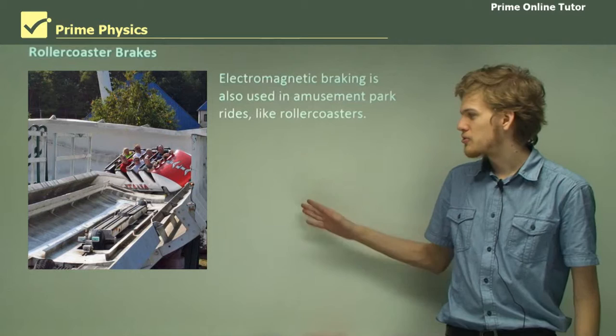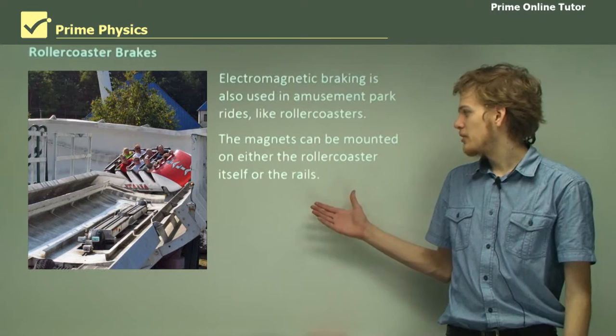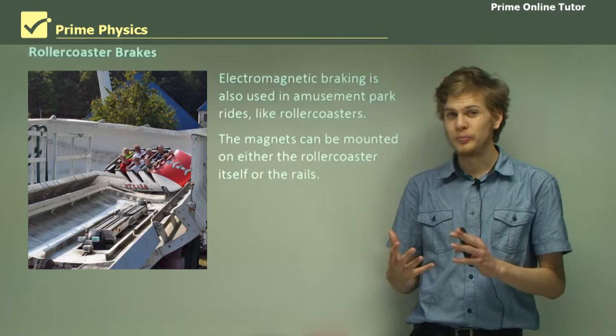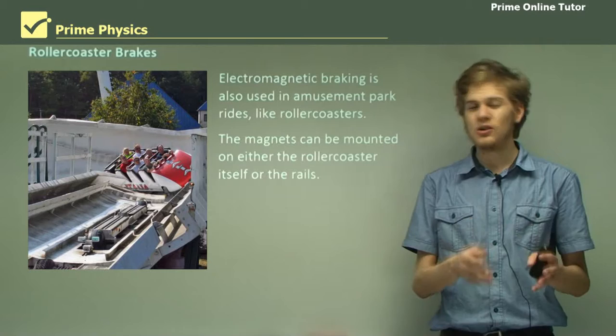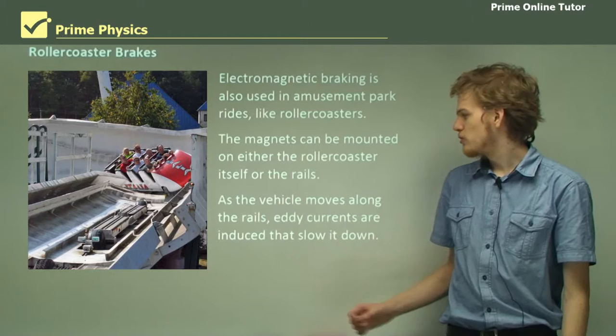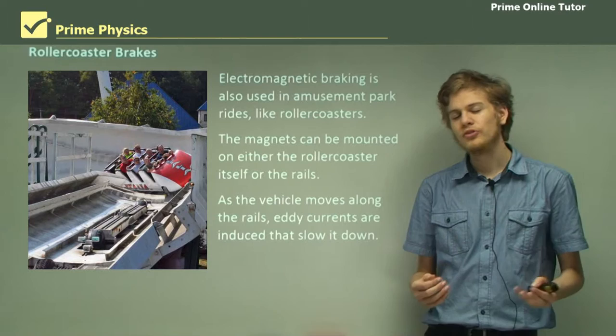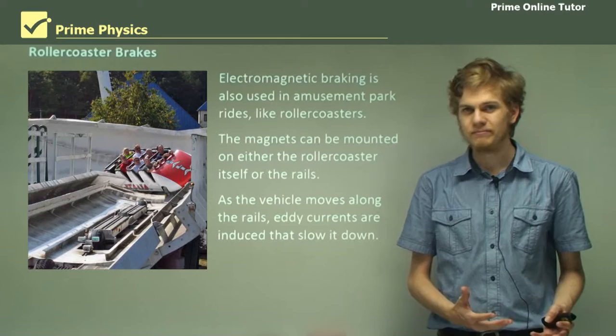Electromagnetic braking is also used in amusement park rides, for example roller coasters. We can see that this roller coaster is about to reach a set of magnetic brakes. The magnets can be mounted on either the roller coaster itself or the rails. Usually roller coasters are very controllable and always stay on the rails, which means we can mount the magnetic field on the rails themselves. As the vehicle moves along the rails, eddy currents are induced and those will slow it down. Once again, kinetic energy is transformed into electrical energy and then heat energy.